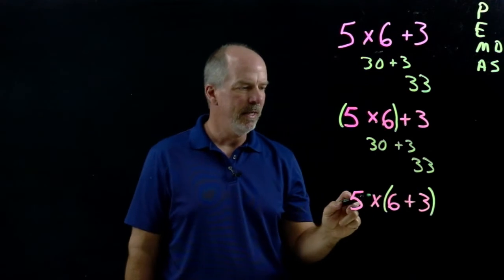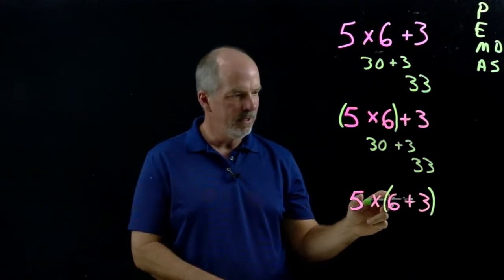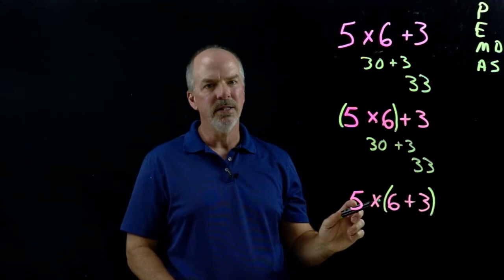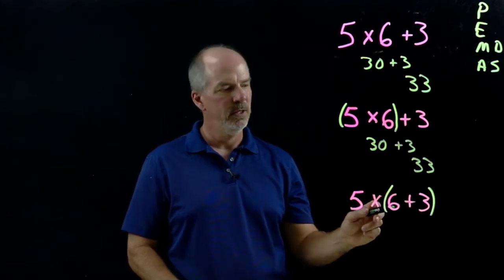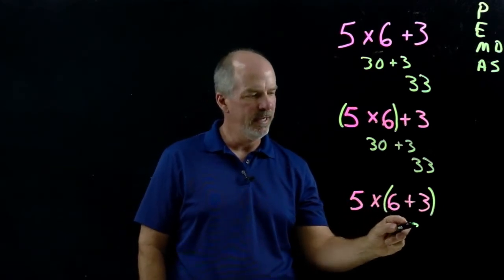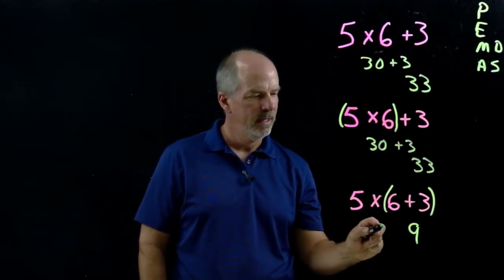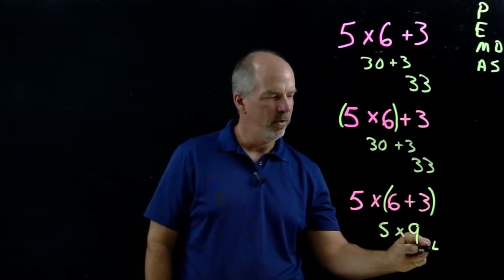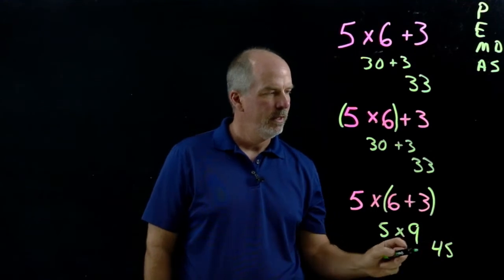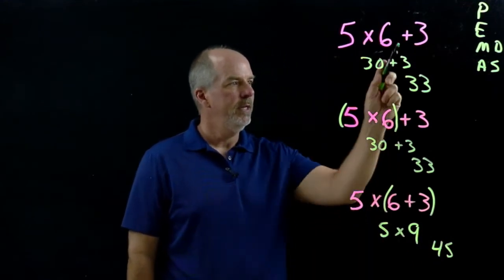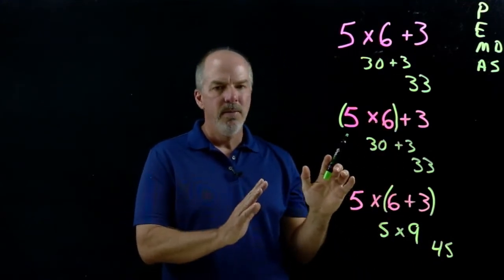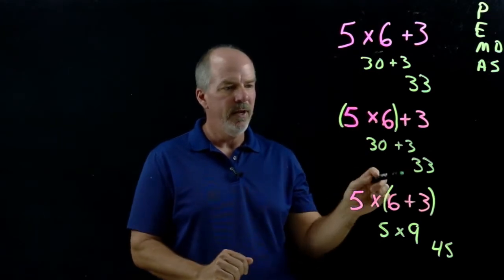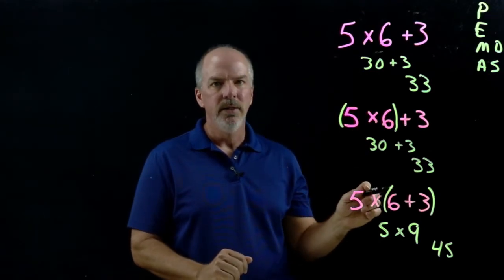The third example, however, the parentheses is now around the addition which forces us to do the addition first. So we do 6 plus 3 is 9, and we have 5 times 9 which is 45. So here are three examples of how parentheses can change our outcome when we evaluate this expression.